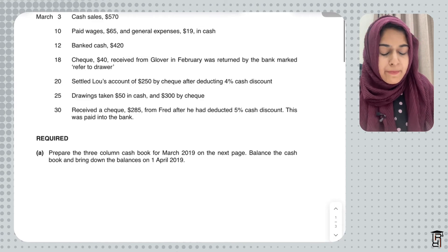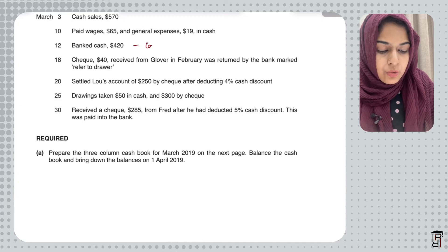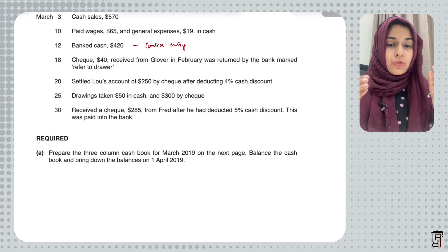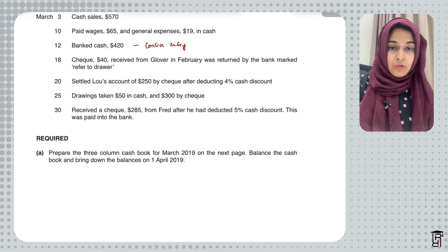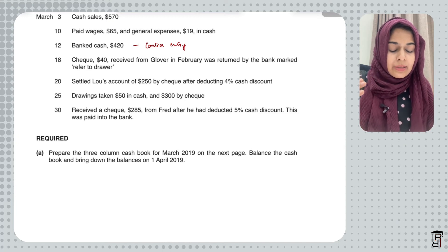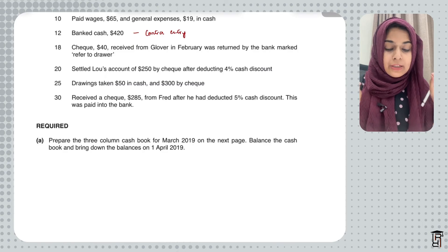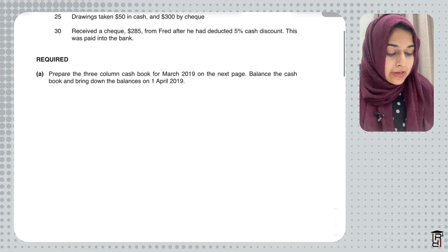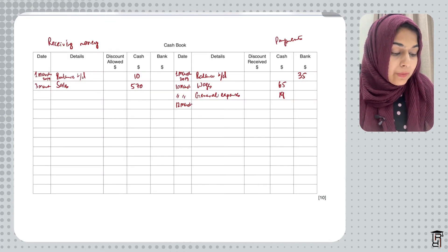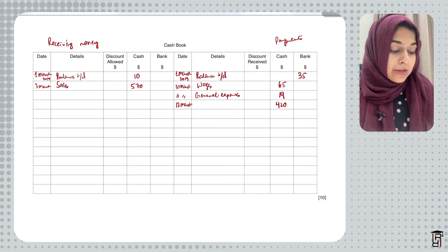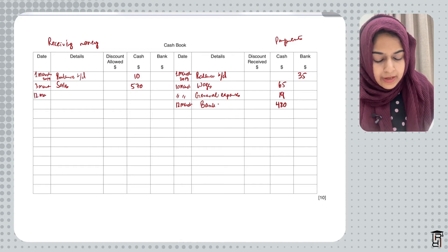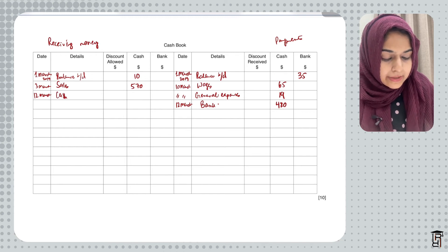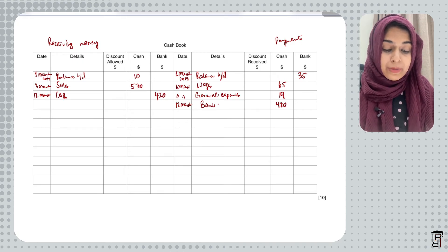On 12th March, banked cash $420. This is a contra entry — when you have excess money in your cash drawer and put it in the bank, the bank account is debited and the cash account is credited. On the credit side, I write 12th March, bank, and $420 in the cash column. On the debit side, I write 12th March, cash, and $420 in the bank column.